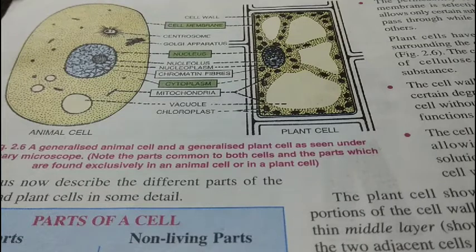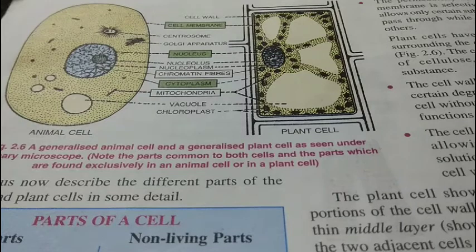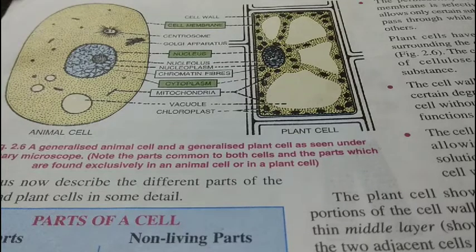There are some organelles found only in plant cells and some only in animal cells. For example, the cell wall and chloroplast are only found in plant cells, whereas the centrosome is only found in animal cells.